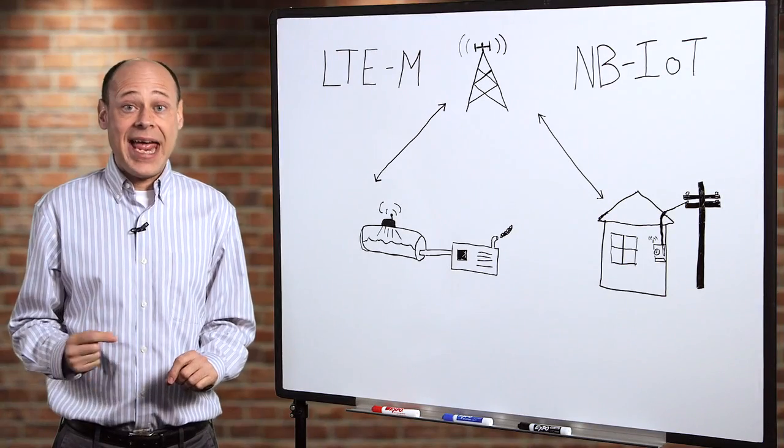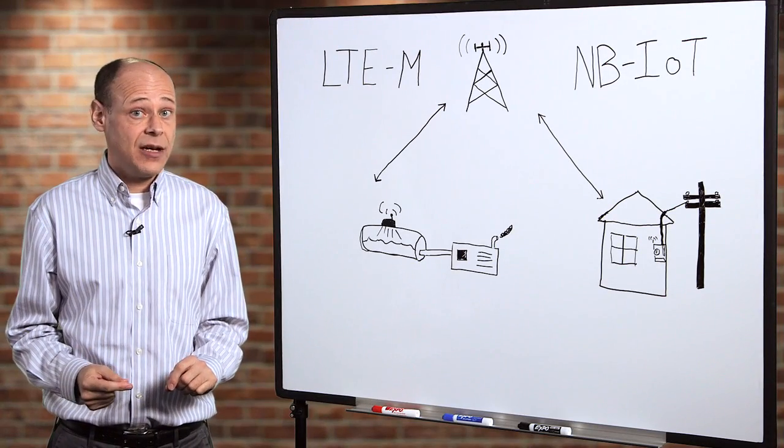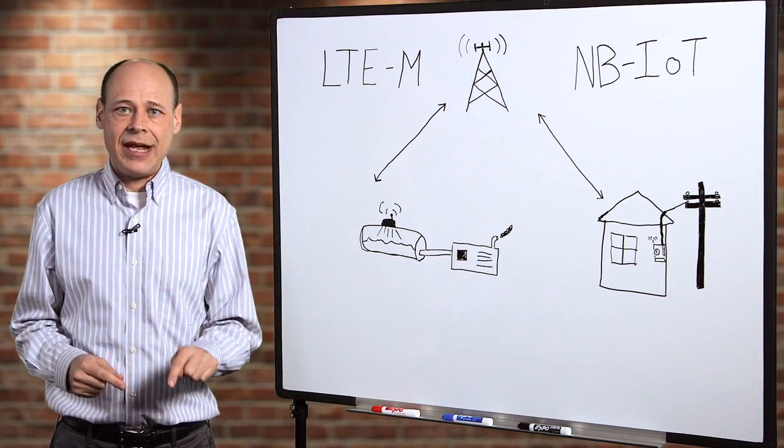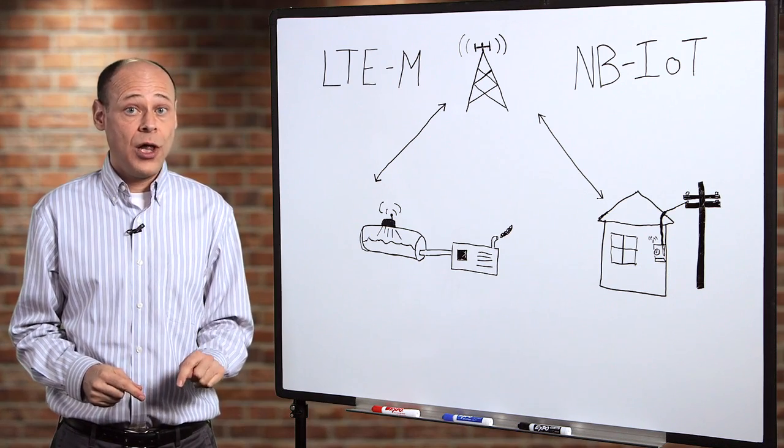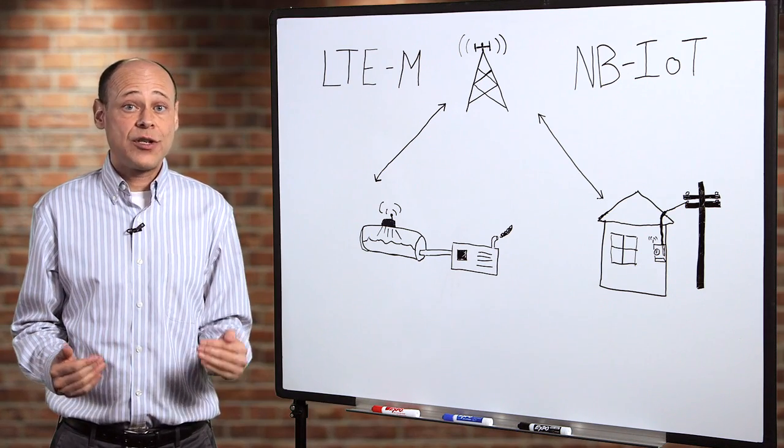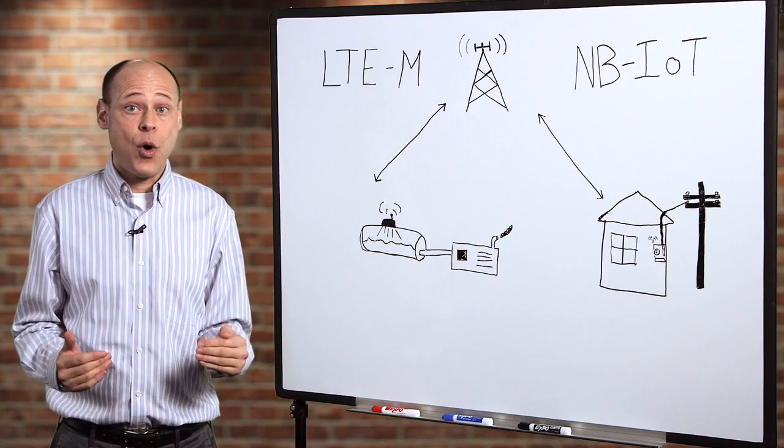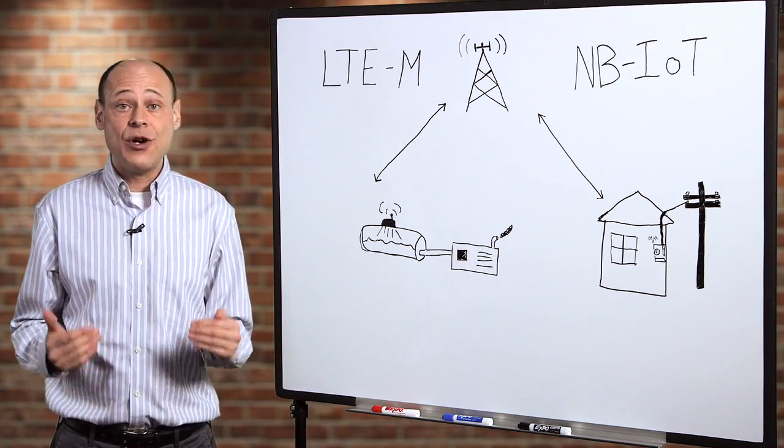While LTE-M and NB-IoT networks are still being built, you can get started today with Digi XB Cellular on LTE-Cat1, a higher bandwidth protocol. Then seamlessly switch over to an XB Cellular LTE-M or NB-IoT device as those networks roll out.